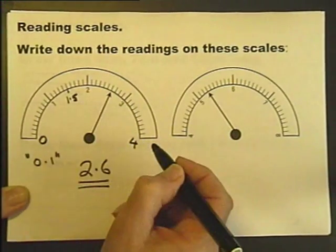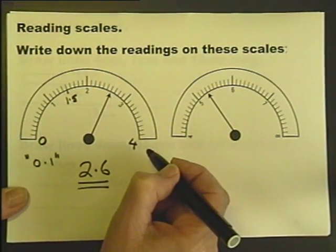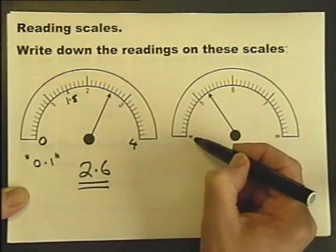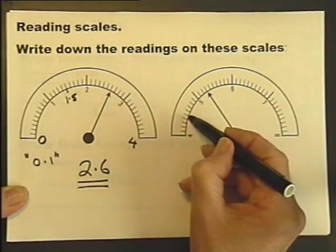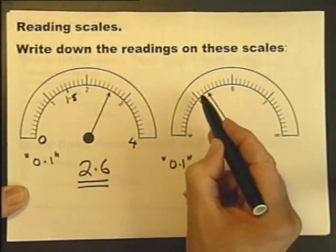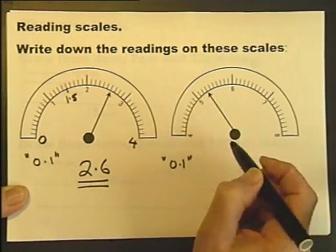Don't know what, it could be 2.6 volts, 2.6 amps, but the number is 2.6. What about this one? It's going the same, it's going up in 0.1's again. So this is 5.1, 5.2, 5.3.